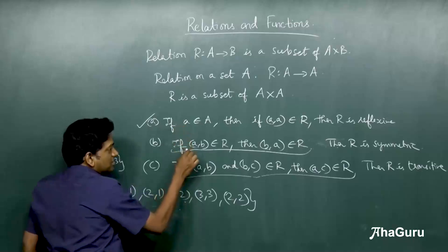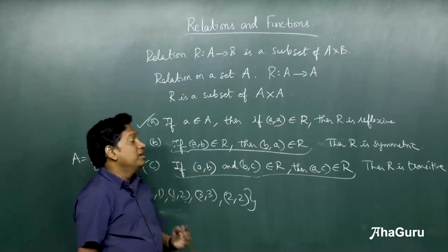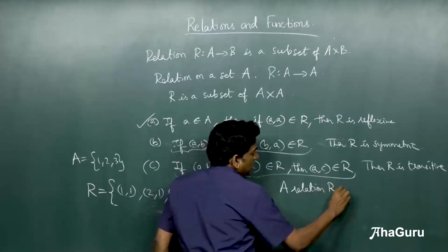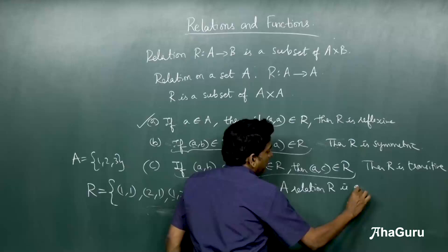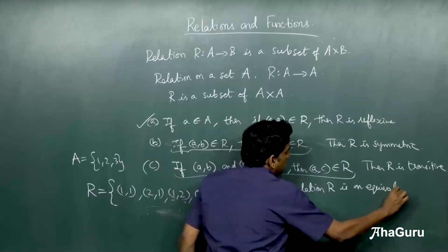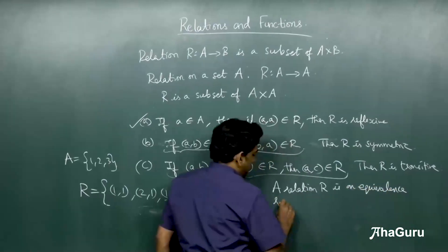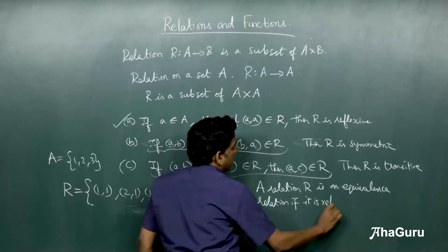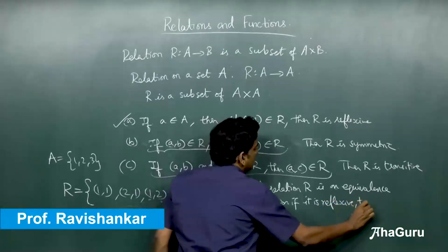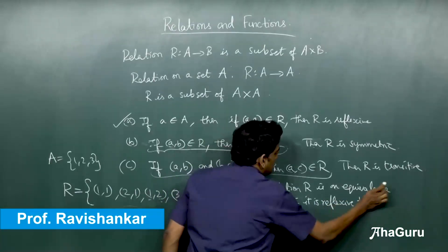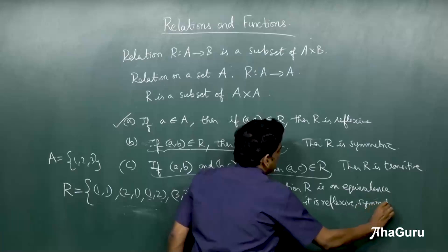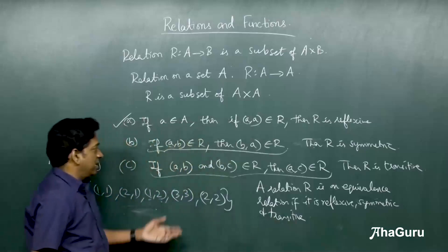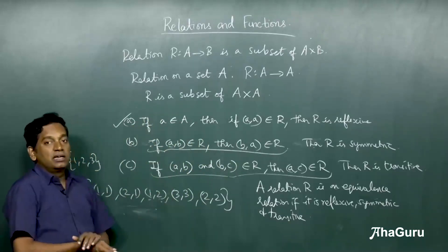Therefore, we say R is reflexive, symmetric and transitive. Now, a relation that satisfies all the above properties is an equivalence relation if it is reflexive, symmetric and transitive. The example we have taken, R is an equivalence relation.